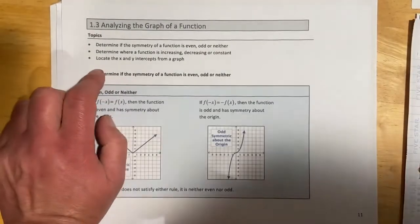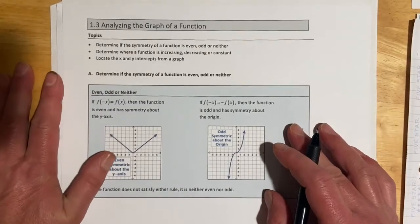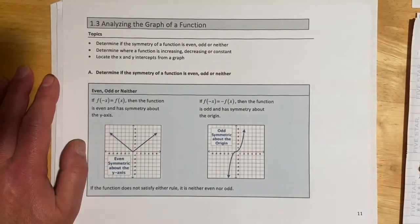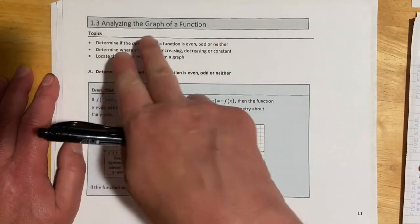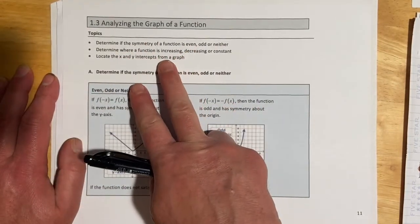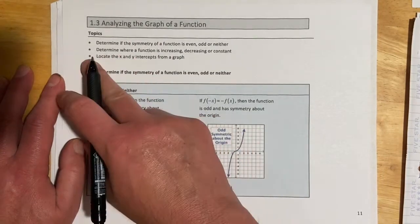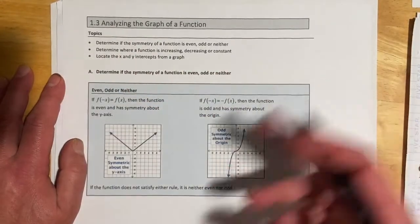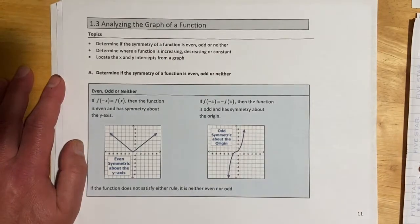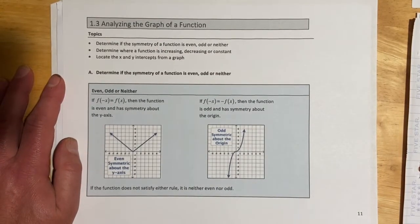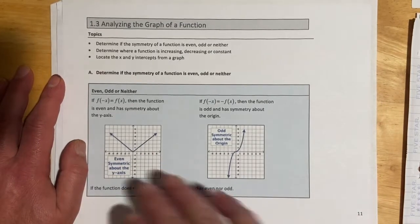This is Derek, and this is section 1.3, analyzing the graph of a function — our third of four sections on functions. In this section, we'll look at even and odd symmetry, increasing, decreasing, and constant behavior and how we describe it, and also locating intercepts and other features of a graph.